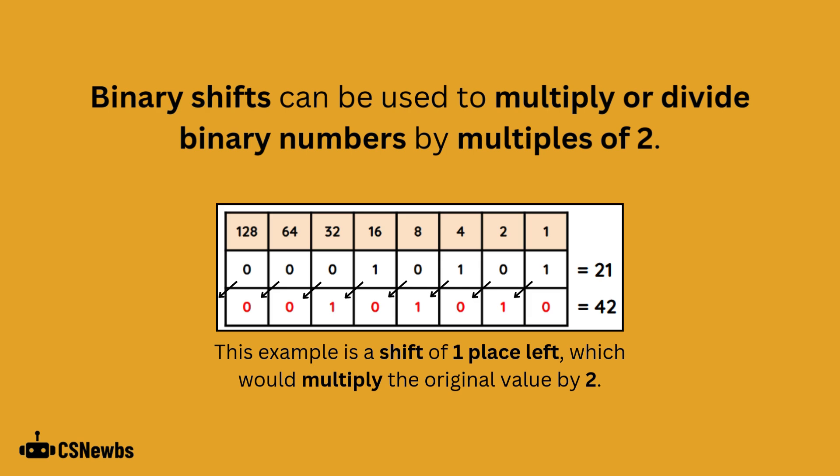Binary shifts can be used to multiply or divide binary numbers by multiples of 2. In this example below, a left shift of one place has occurred to change 21 into 42 by moving all of the values one place to the left, doubling the number.